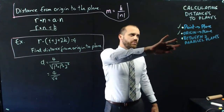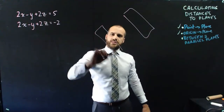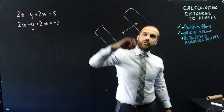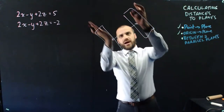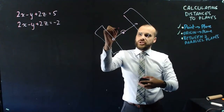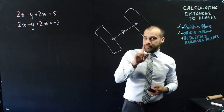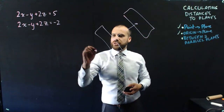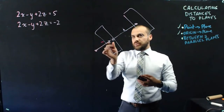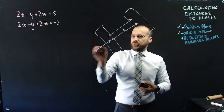We've done point to a plane and origin to a plane. What about the distance between two parallel planes? We can be sneaky here. We know how to find the distance from the origin to each plane. Because they're parallel, the origin-to-plane distances will either be on the same side or opposite sides of the origin. If they're on opposite sides, we add the distances; if the origin lies between them on the same side, we subtract one from the other.